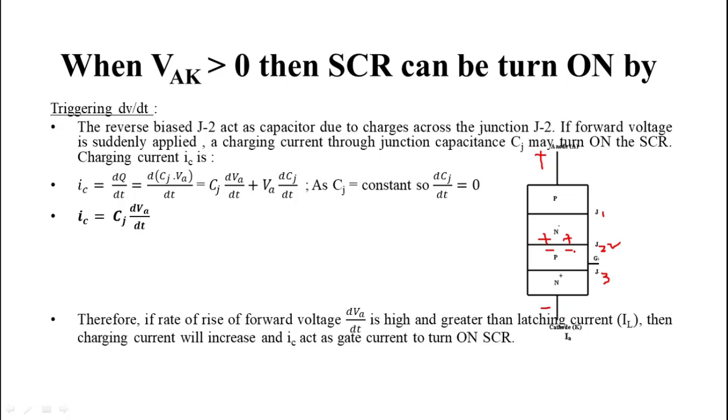So this reverse bias junction J2 act as capacitor having capacitance CJ. Now if forward voltage is suddenly applied, then the charging current start flowing and this junction carries current IC that is charging current. This charging current is given by IC equals dq by dt. We know that q equals CV, that's why we can write d by dt CJ dot VA.